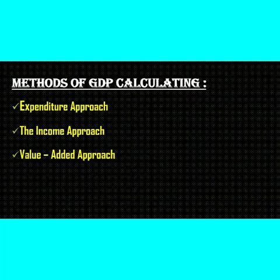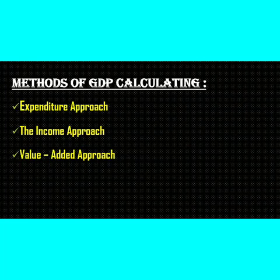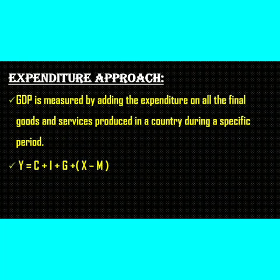Next we will see the methods of calculating GDP. In our country we calculate GDP through three approaches: first, the expenditure approach; second, the income approach; third, the value added approach. GDP is measured by the expenditure approach by adding the expenditure on all the final goods and services produced in the country during a specific period.